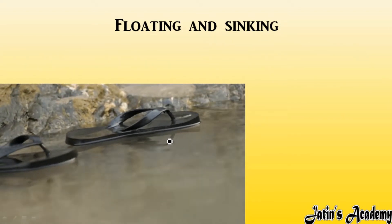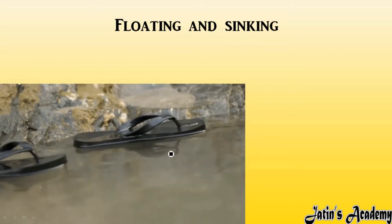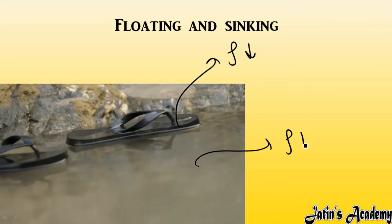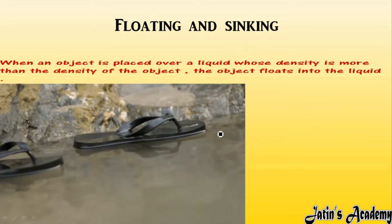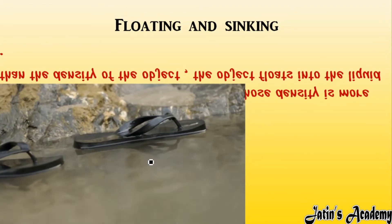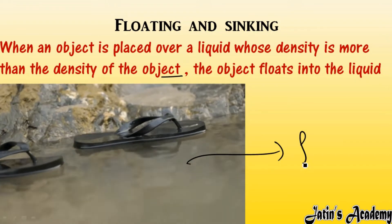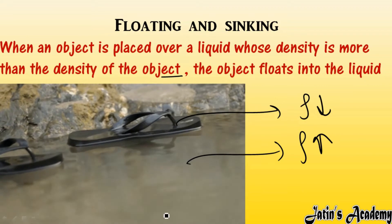In the flotation process, if we immerse an object into water that is less dense than water — for example, footwear having less density than water — then water is more dense, and so this footwear will float. When an object is placed in a liquid whose density is more than the density of the object, that object will float. Less density means flotation; more density means sinking.